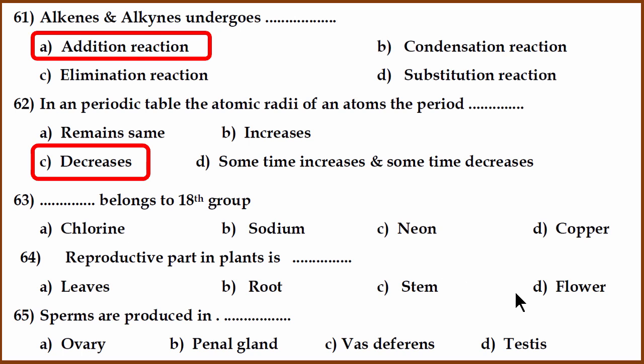Now we have biology question again. What is the reproductive part in the plant? Reproductive part of the plants is actually flower. Flower is the reproductive part. In humans, where is sperm produced? Sperm is produced in testis. Again, spelling mistake there, but it is testis.